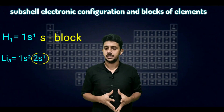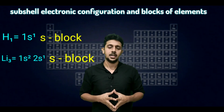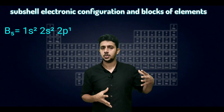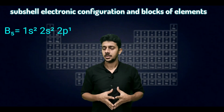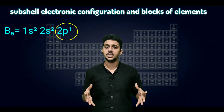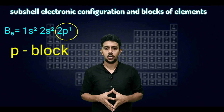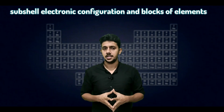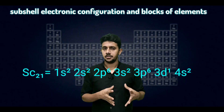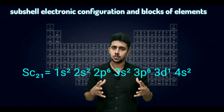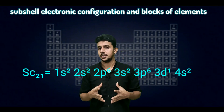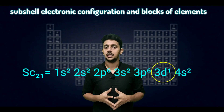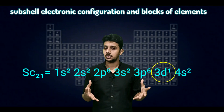So lithium is also an s-block element. Now look at boron, atomic number five. The configuration is 1s2 2s2 2p1. The last one electron is added to the p sub-shell, hence it is considered a p-block element. Look at scandium: its configuration is 1s2 2s2 2p6 3s2 3p6 4s2 3d1. The last electron is added to the d sub-shell, so it is considered a d-block element.